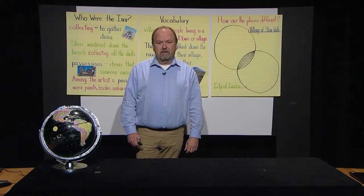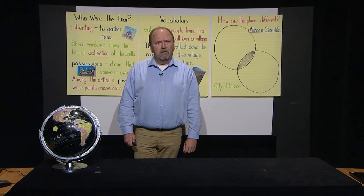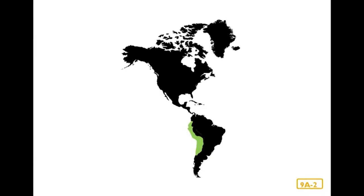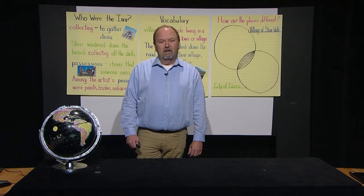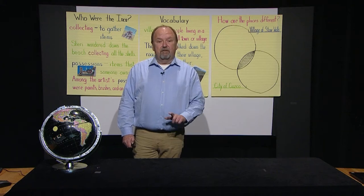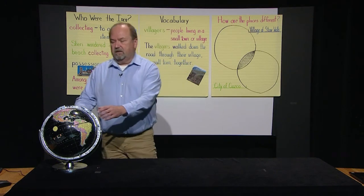The title of our story is The Inca — Who Were the Inca? The Inca were one of many groups of people who lived in North, Central, and South America long ago. They lived in the western part of South America, which you can see on the map. The Inca lived in parts of what we now call Bolivia, Ecuador, Argentina, Peru, and Chile. They controlled about 2,500 miles of land in South America. That's about the same distance as if you measured from one side of the United States to the other.